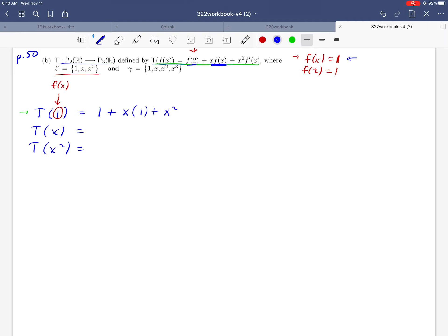And then finally, x squared times the derivative of f of x. Well, what's the derivative of f of x equals 1? That's just going to be 0. So what we wind up with here then is just 1 plus x it looks like. And we're ready then to move on to the next calculation.